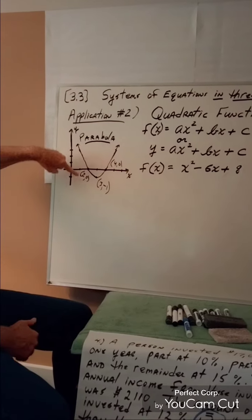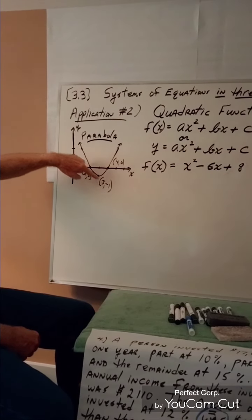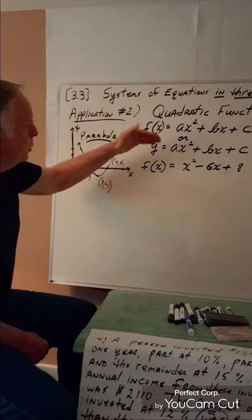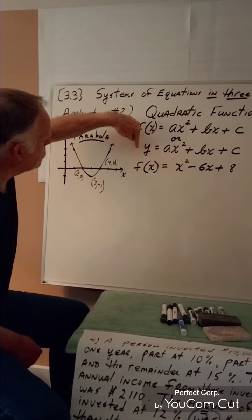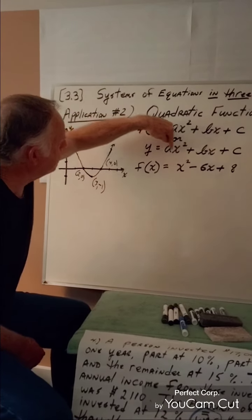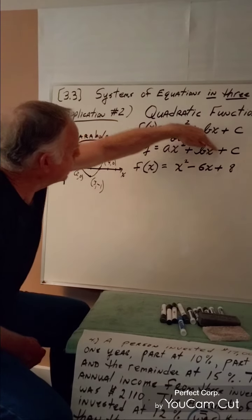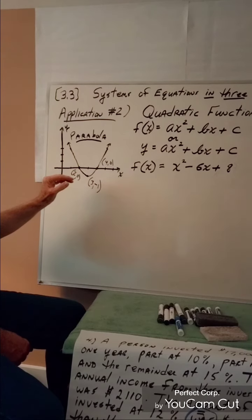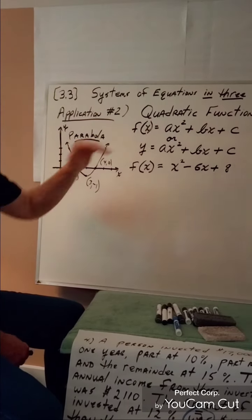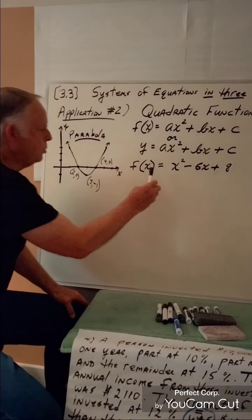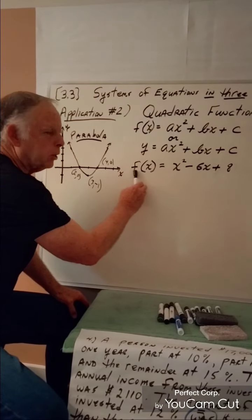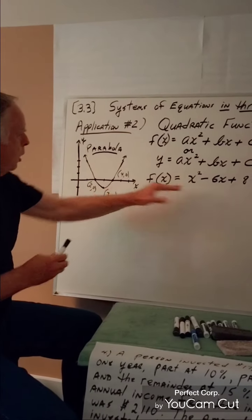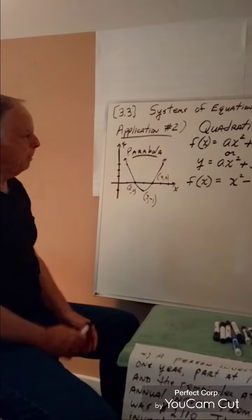Once again, we take these three points — these three ordered pairs — and substitute them correctly into the quadratic function model. When we do that, we are able to come up with the literal quadratic function whose graph is that very parabola.